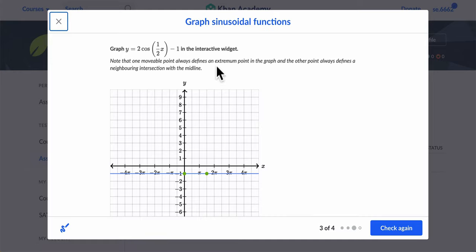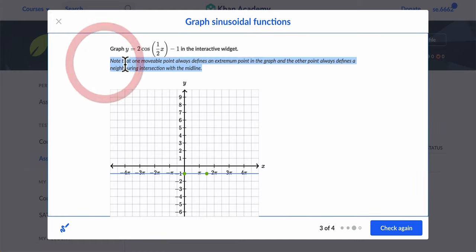So in this Khan Academy, a really important note appears right here. It tells you that one of the movable points always defines an extremum, so a max or a min, and the other one always defines the midline.